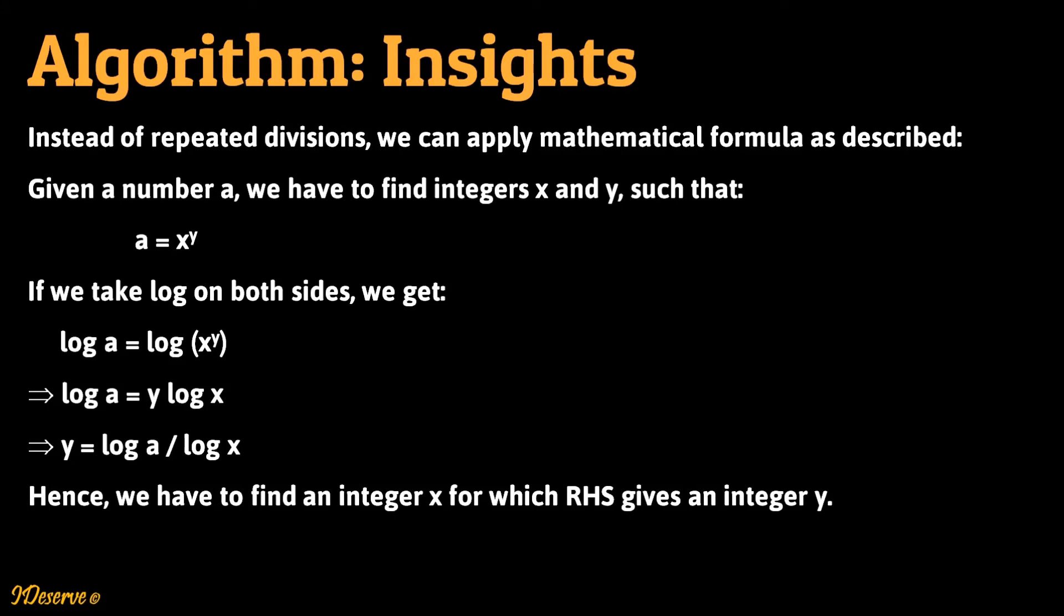Now let's have a look at the algorithm for solving this problem. These steps will be explained in detail with an example in subsequent slides. Do not worry if you do not get it right away. For the given number a we have to find integers x and y such that a is equal to x raised to y.